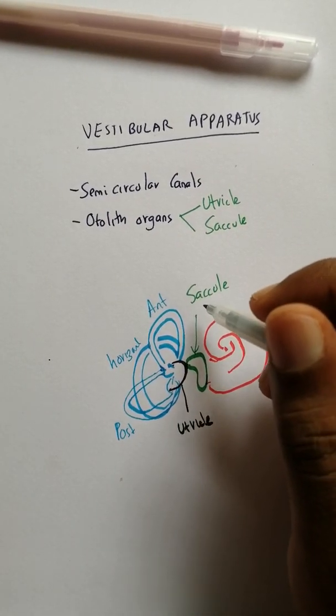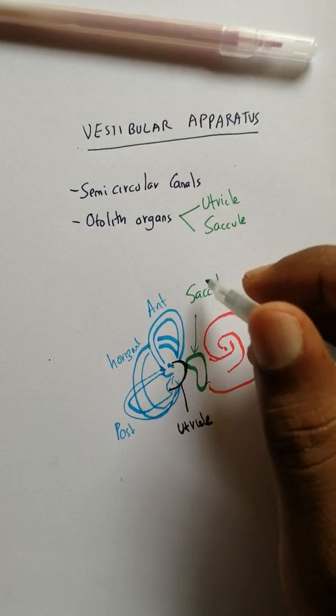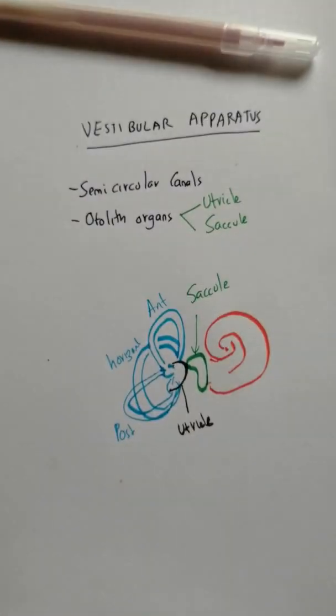First, let's look at the otolith organs. The utricle and saccule have hair cells in something known as the macula.